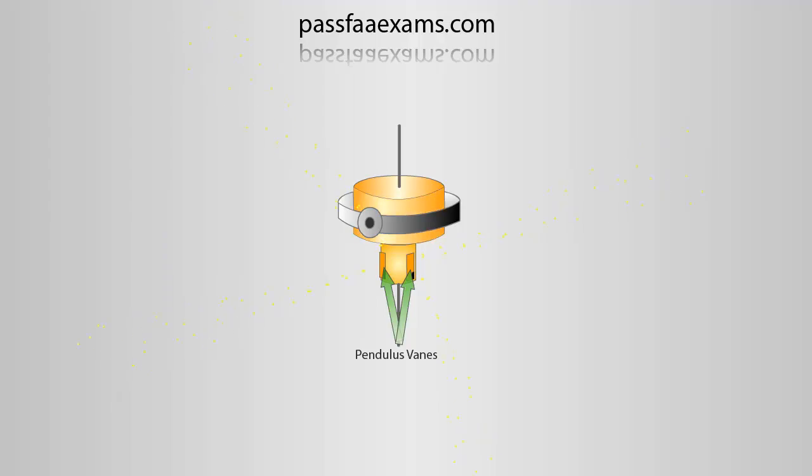What happens in the attitude indicator is the same as the bicycle wheel we saw earlier. Every time a force is applied to the airplane, the gyro responds with the same force 90 degrees ahead in the same sense of its rotation.